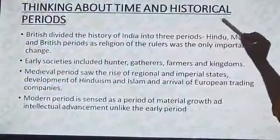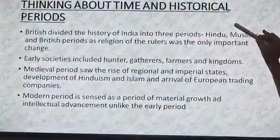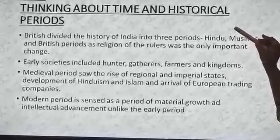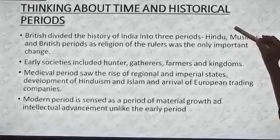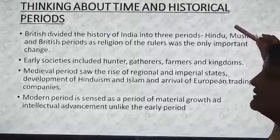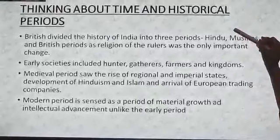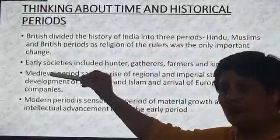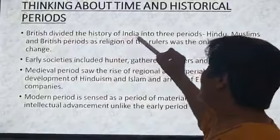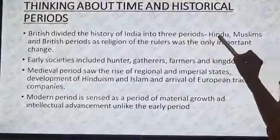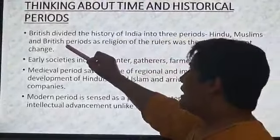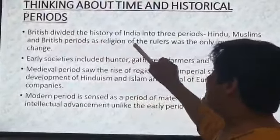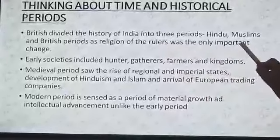Thinking about time and historical periods: as you know, the historical period is divided into three parts — ancient history, medieval history, and modern history. But the British historians divided history into three periods: the Hindu period, the Muslim period and the British period. This division was based on the religion of the ruler, meaning only the religion of the ruler was considered the important change.